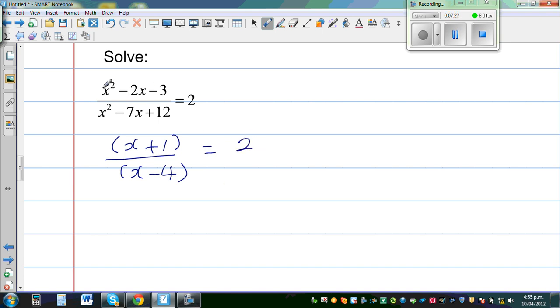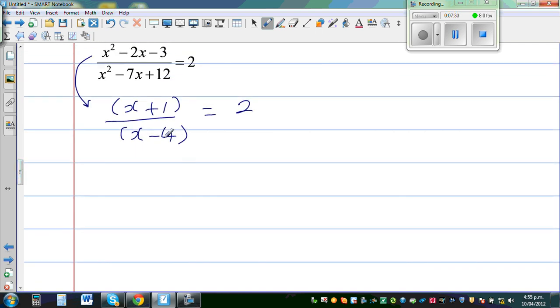This simplifies to this. We already done that. So now you have to cross multiply, or multiply both sides by x minus 4. So this is x plus 1 equals 2 times x minus 4.